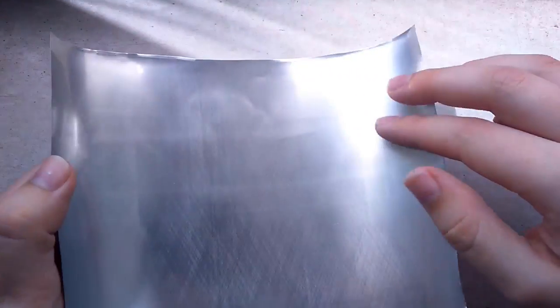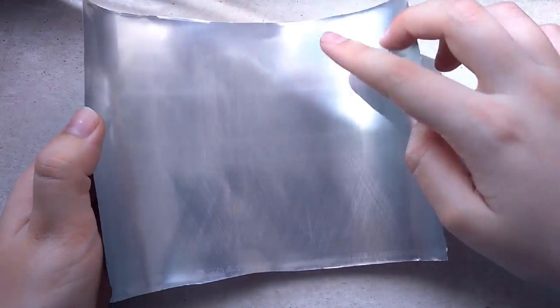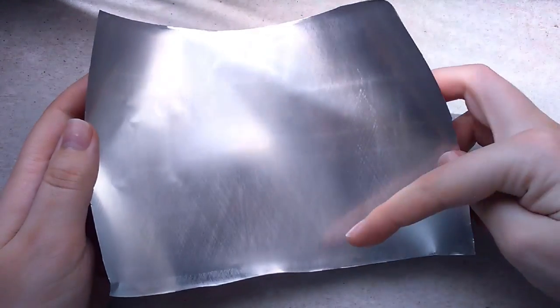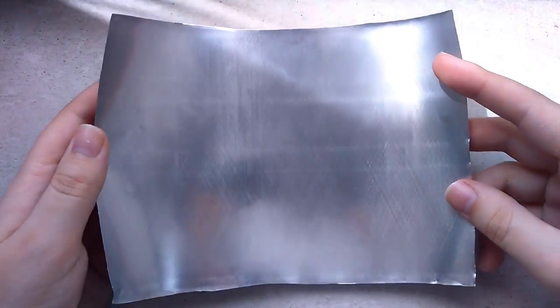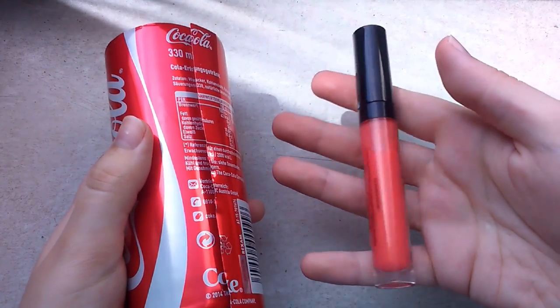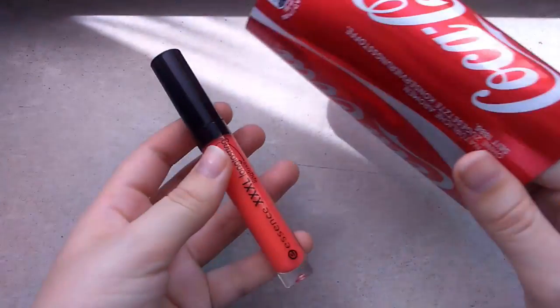It needs to be flattened out, but before that make sure that there are no rough edges or pointy corners. Actually cut the edges smoother than me, I didn't do a very good job here. Then take something like a thick marker, or I'm using this lip gloss, and bend the metal around it.